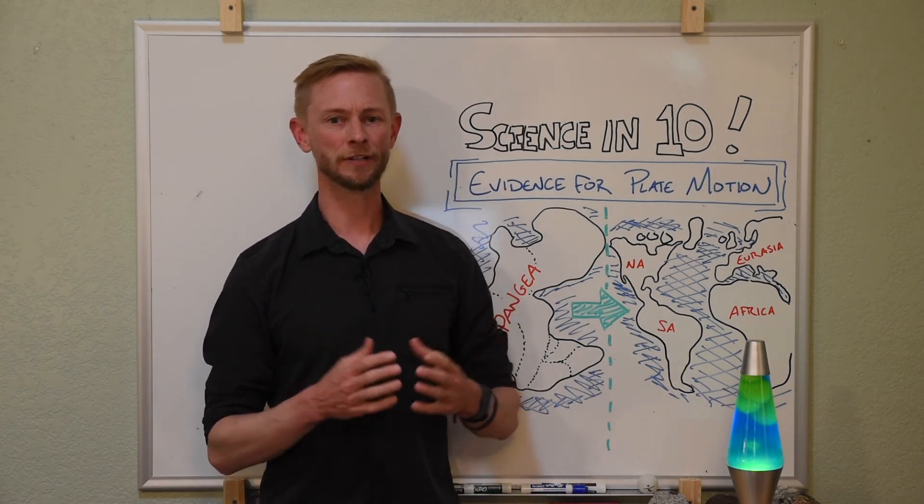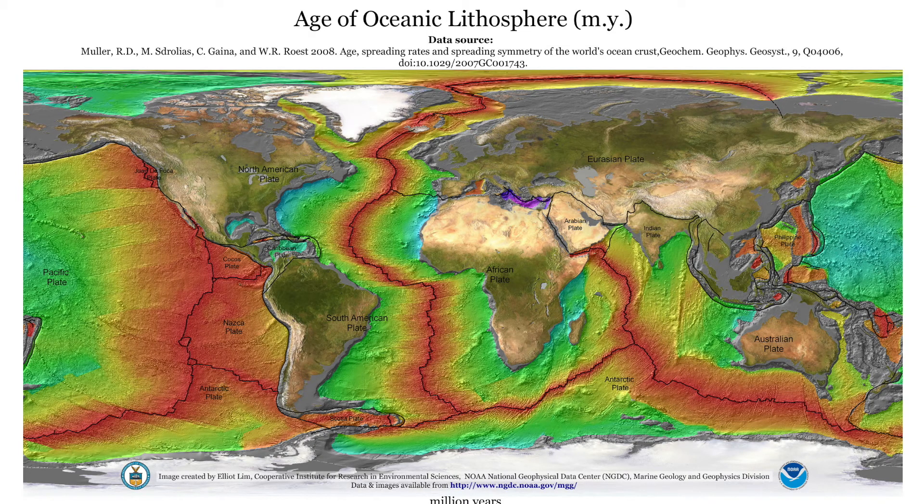Here's a map showing the age of the ocean floor around the world. This is all crust produced by seafloor spreading at mid-ocean ridges. Areas where the crust is youngest are red, old crust in green to blue to purple.